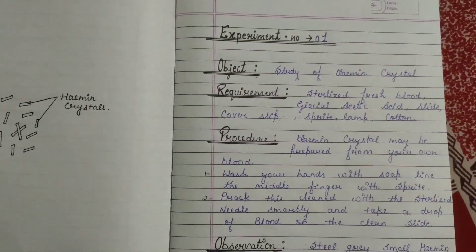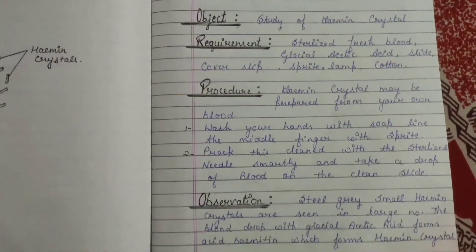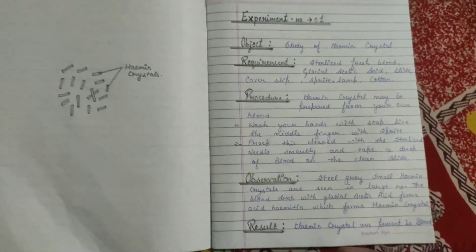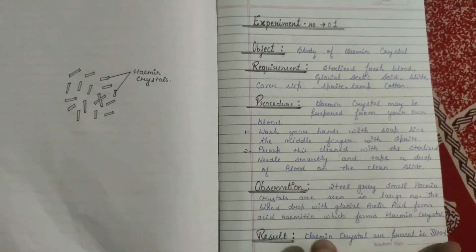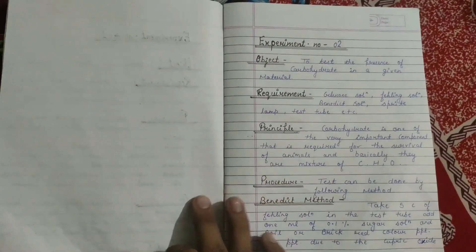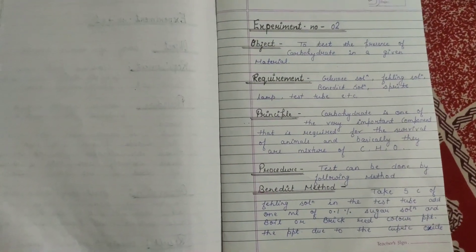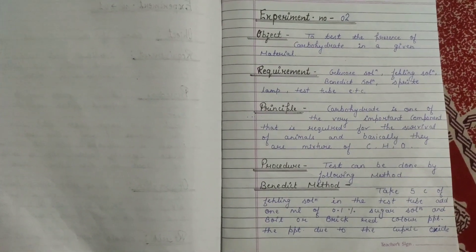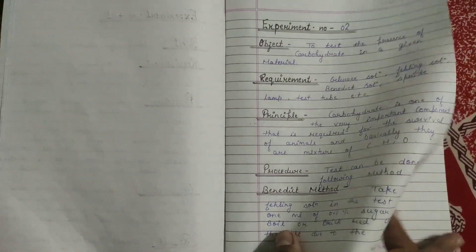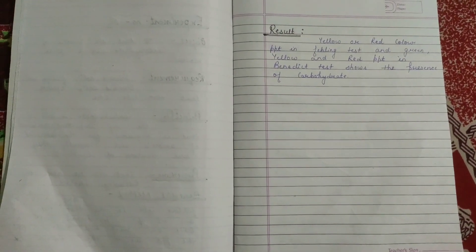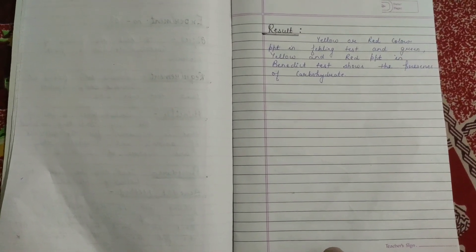Experiment number one is the study of Haematin crystal. Here all the objectives, requirements, procedure, observation, and result are mentioned. Then there is experiment number two, where similar headings are mentioned, and in the last there is a result for this experiment.